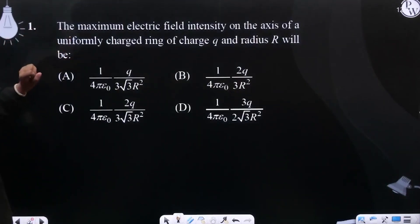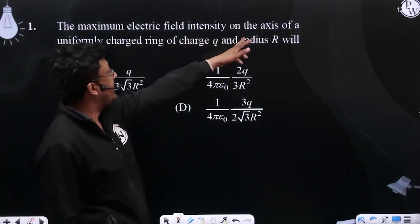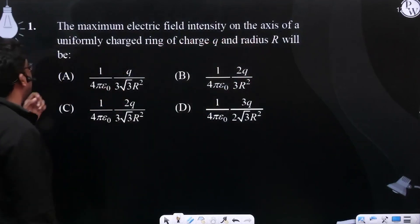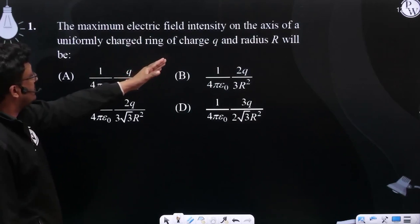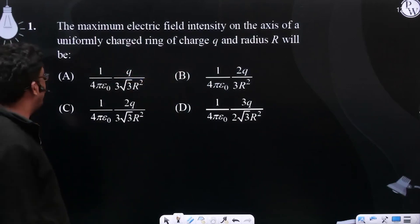So our first question is: the maximum electric field intensity on the axis of a uniformly charged ring of charge q and capital R radius will be.